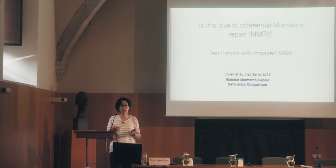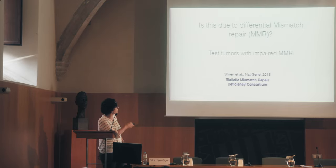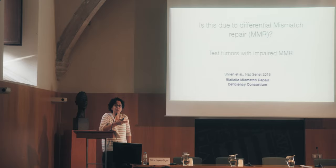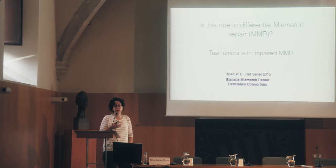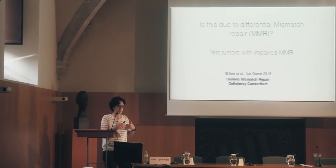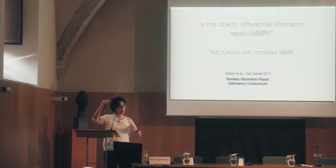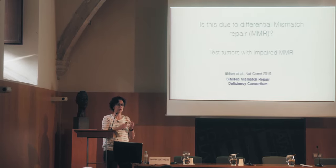To answer that, we analyzed tumors with deficiency in mismatch repair. We took data from the biallelic mismatch repair deficiency consortium — whole genomes from kids born with biallelic mutations in the mismatch repair genes, so they don't have any mismatch repair from birth. They develop brain tumors in which they also have mutations in the polymerase epsilon. So these are hyper super mutators because the number of mutations is one order of magnitude higher. They have mutations in the polymerase, they do a lot of mismatches, and they don't have mismatch repair.